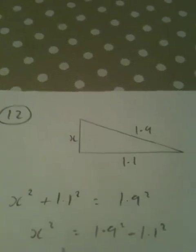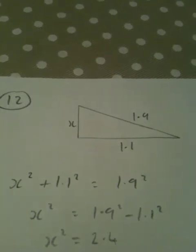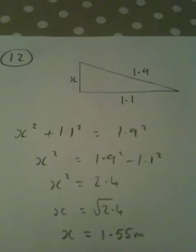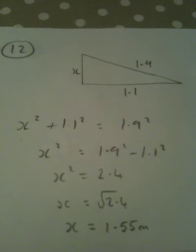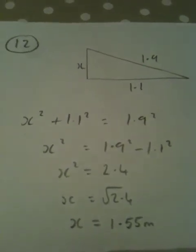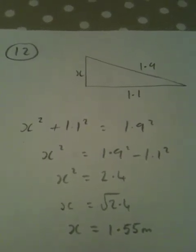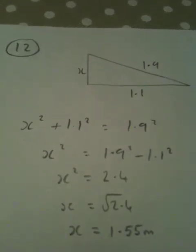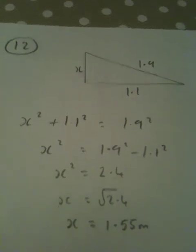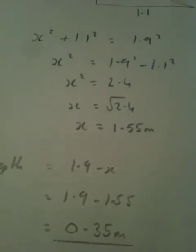Apply Pythagoras's theorem: x squared plus 1.1 squared equals 1.9 squared. Subtract 1.1 squared from both sides, evaluate that on the calculator. Comes out as 2.4. Remember that's x squared, not x, so square root to get x is 1.55 meters to the nearest centimeter. Now that is not what was asked for in the question. The question actually asked for the depth of the oil. Going from the center of the circle straight down will be the radius, so it'll be 1.9 meters from the center to the bottom. If we subtract x that we've just worked out, 1.55, we'll be left with the depth of the oil, which will be 0.35 meters.